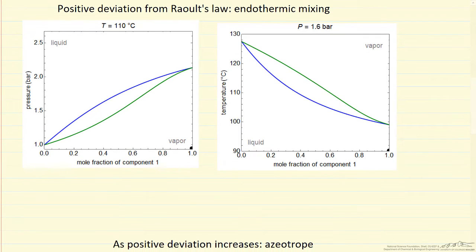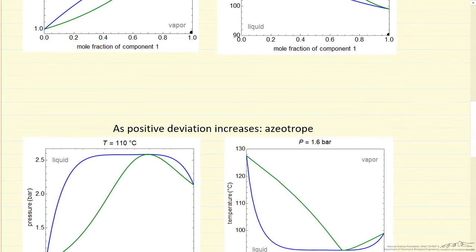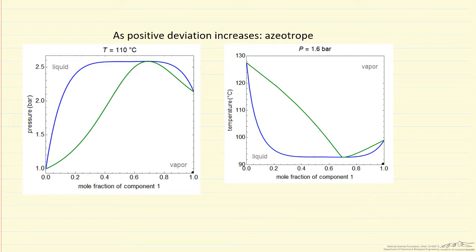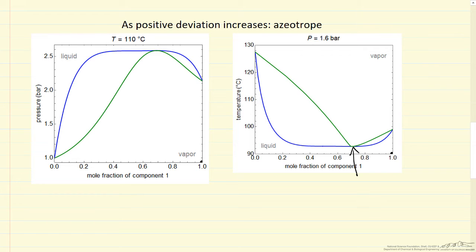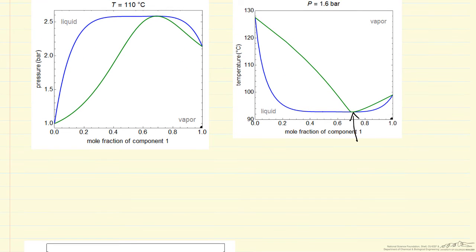If we go to the extreme and make much stronger positive deviations, then we get this behavior where we have a maximum in the bubble line and the dew line on the pressure diagram and a minimum in the temperature. This is an azeotrope. The azeotrope point is here where the liquid and vapor compositions are identical. Notice the boiling point of the mixture is significantly lower than either the pure component boiling points.